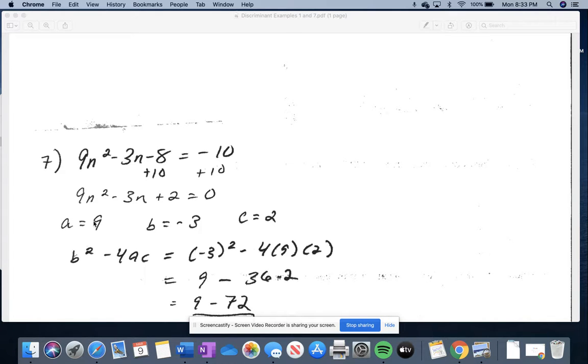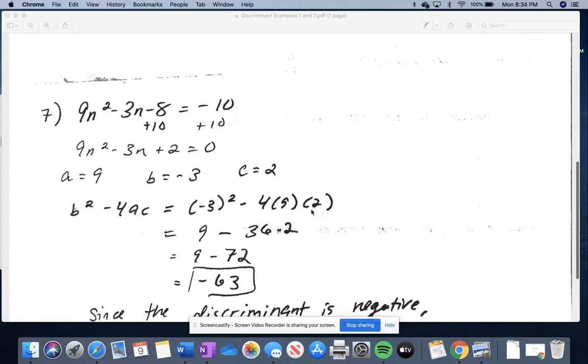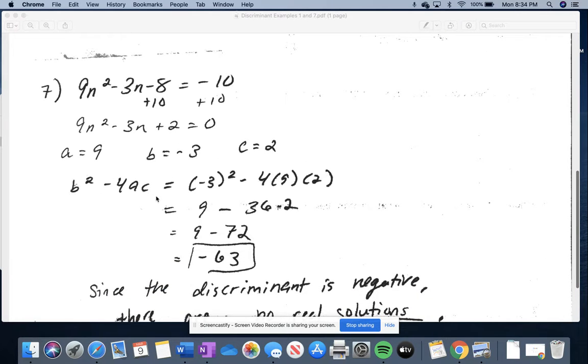So a is 9, b is negative 3, and c is positive 2. So then we just substitute all of those things into b squared minus 4 times a times c. So b squared is negative 3 squared minus 4 times a, which is 9, times c, which is 2.